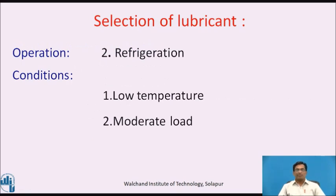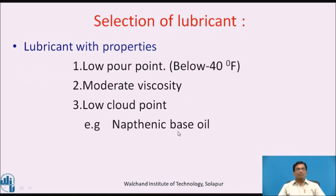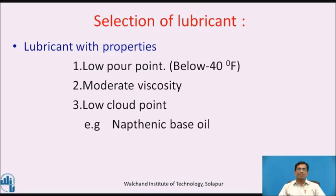The second operation is refrigeration. In refrigeration, the temperature is reduced, so the conditions are low temperature and moderate load. Lubricants for this operation should have a low pour point (below 40°F), moderate viscosity, and a low cloud point. As an example, naphthenic base oil can be selected as a lubricant for refrigeration systems.